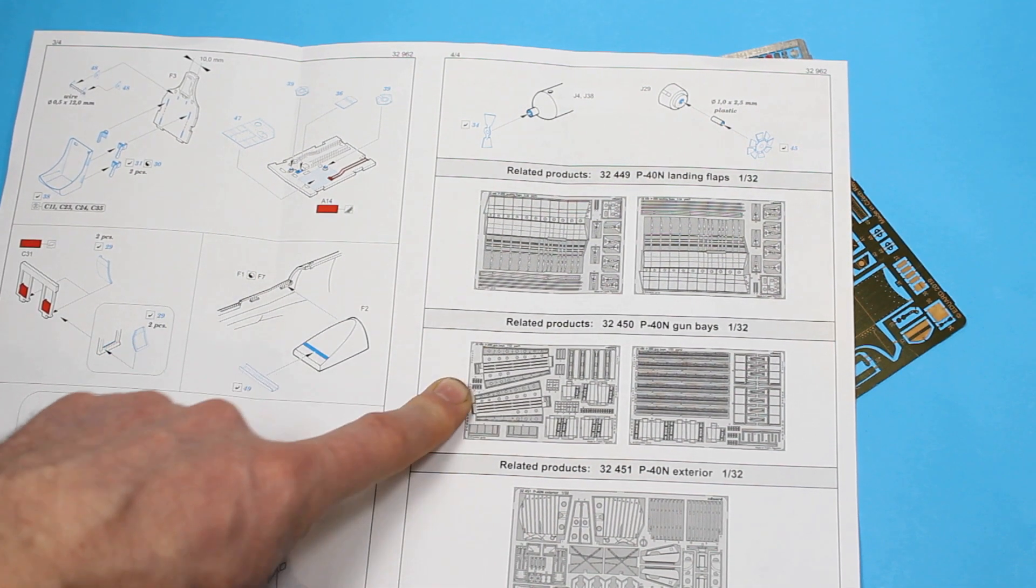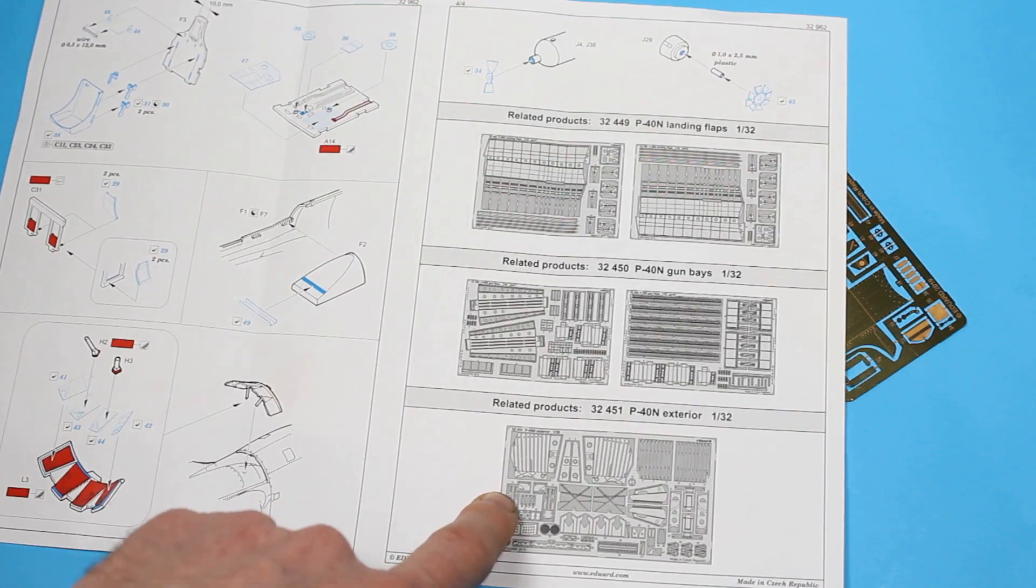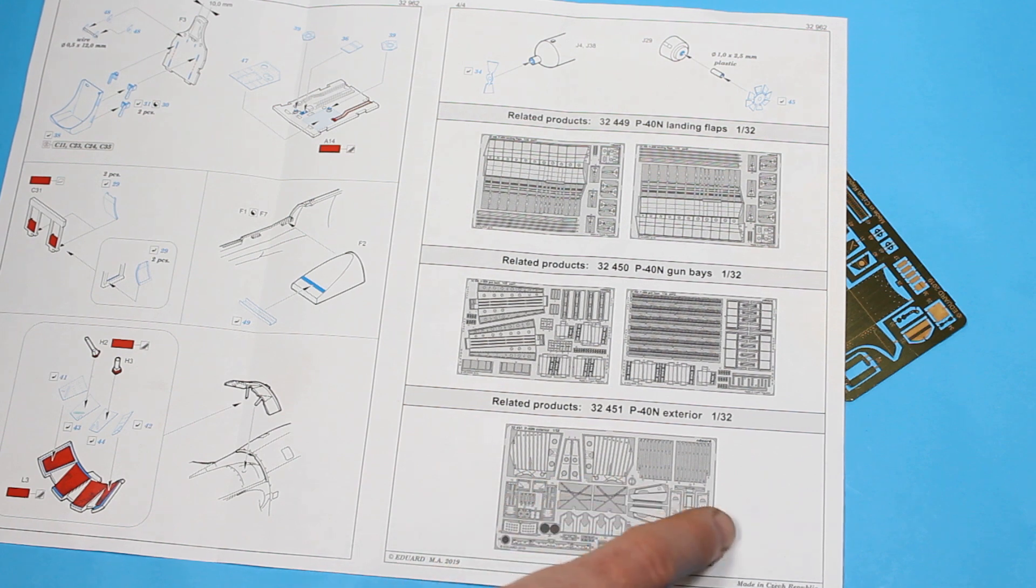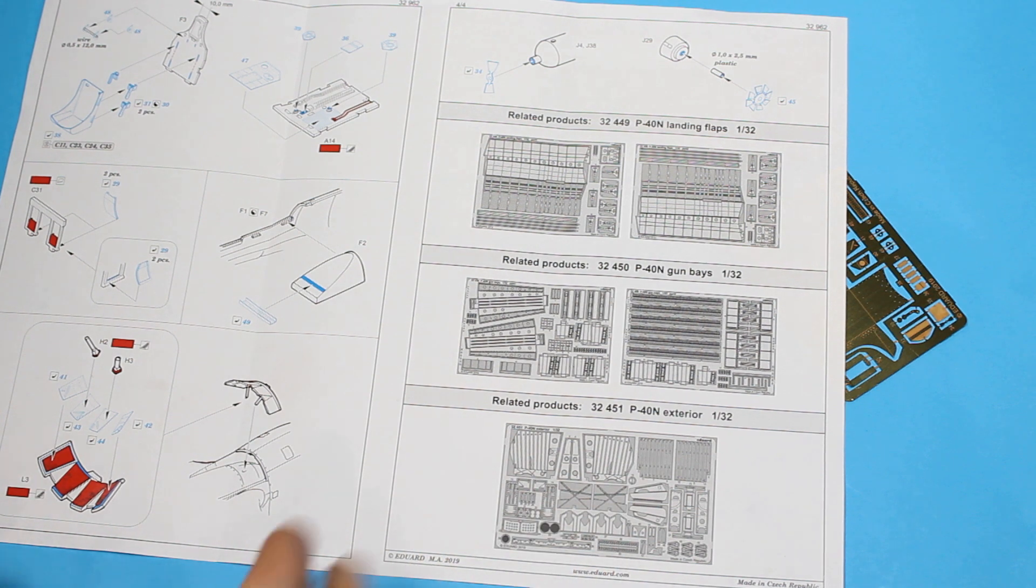You've got gun bays - I'm not sure that's necessary to open but if you want to, you've got that. And then the exterior, it seems that most of this is going into the wheel well, and for what you get in the kit I can't see why you'd want to change that. A few other small details for the rest of the exterior but most of that goes into the wheel wells.